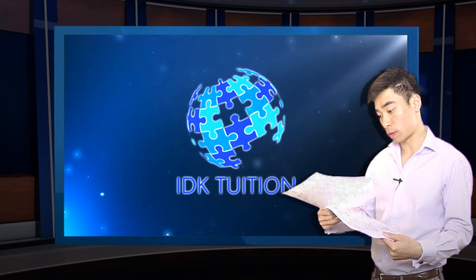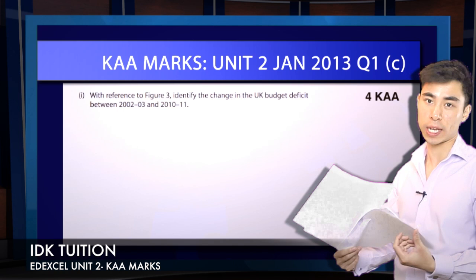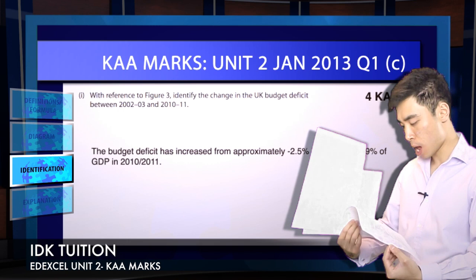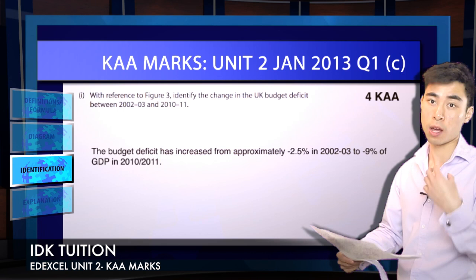Question C(i) is a small four-marker: 'with reference to figure 3, identify the change in the UK budget deficit between 2002-2003 and 2010-2011.' It's quite easy to see — it's going to be an increase in the budget deficit. In terms of exam technique, remember to make an explicit reference to the extracts and pull out those figures to pick up the marks.